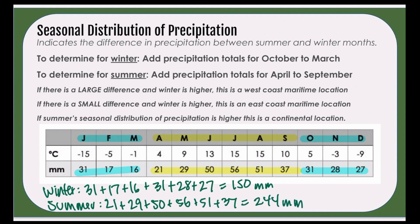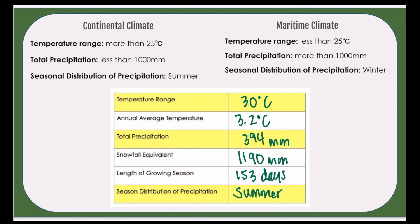Now you're going to want to look to see which of these two totals is higher. Our higher one is the summer, so therefore the seasonal distribution of precipitation takes place in the summer months. Now we want to figure out whether this location has a continental climate or a maritime climate. Maritime climates tend to be near larger bodies of water, like the Atlantic Ocean or the Pacific Ocean, and climate conditions are going to be different than a location further away from a body of water.